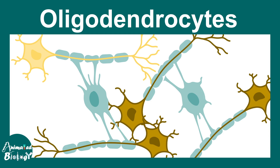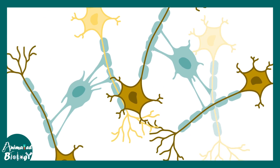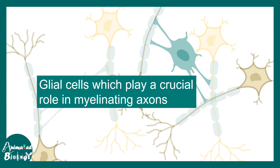In this video we'll be talking about oligodendrocytes, which are one type of glial cell. Oligodendrocytes are a type of glial cell which play a crucial role in myelinating the axons of our central nervous system.